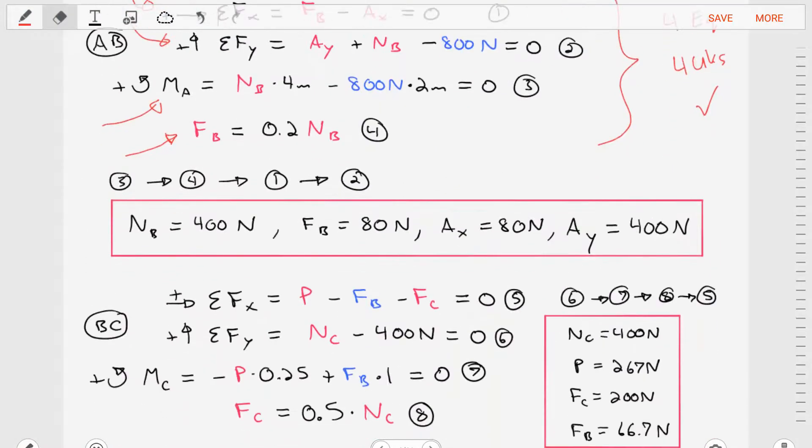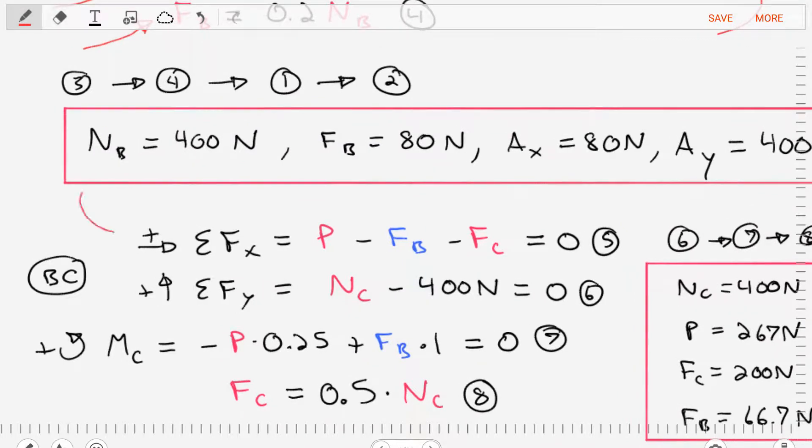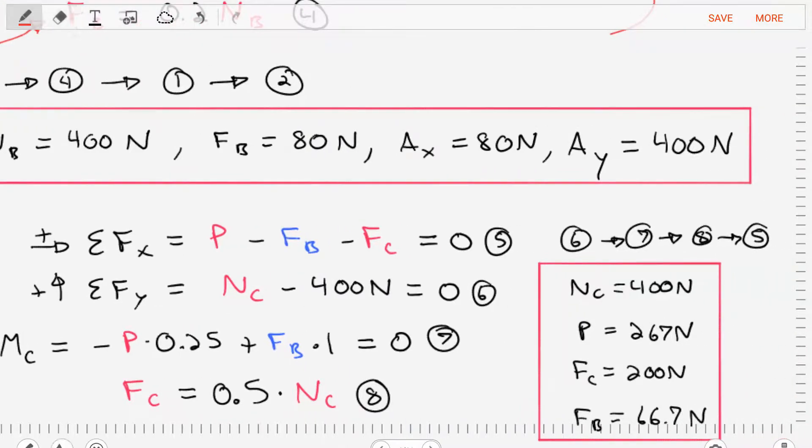So let's craft equations of equilibrium for that diagram. We'll sum the forces in the X direction. We'll sum the forces in the Y direction. And we'll sum the moments about point C. We also still have that extra equation for friction FC. So here we actually have more equations than unknowns. The order that we'll solve these equations: we'll solve equation six first, then equation seven, then equation eight, and then back to equation five.